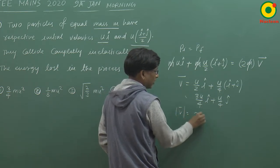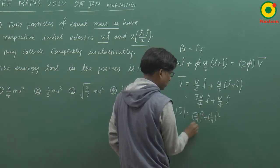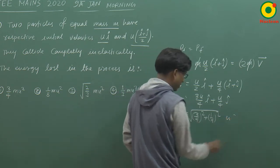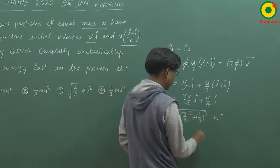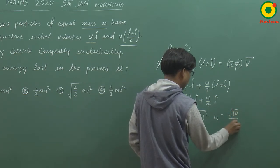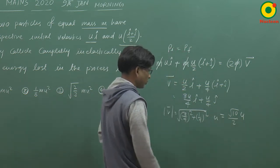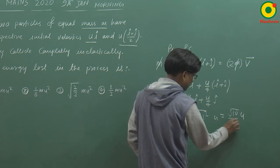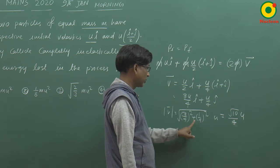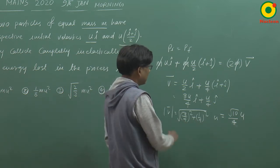So the magnitude of final velocity will be the square root of (3/4)² plus (1/4)², times u. This becomes √(9+1) divided by 2, times u. So u/4 comes here, since there's 4 here. So this gives us the final velocity.